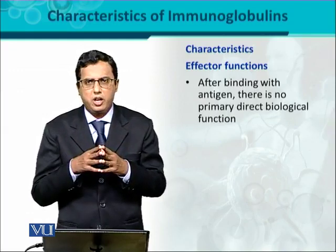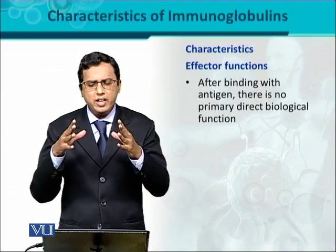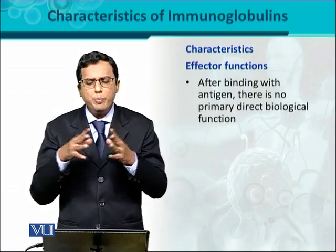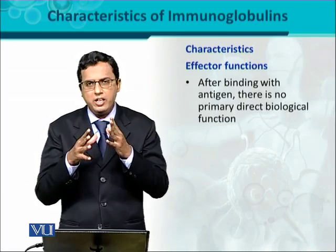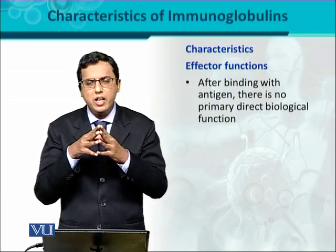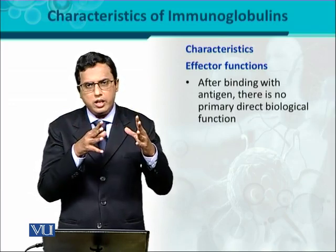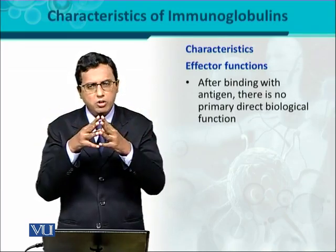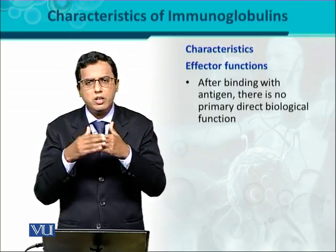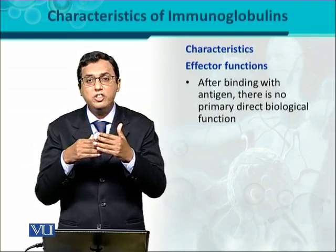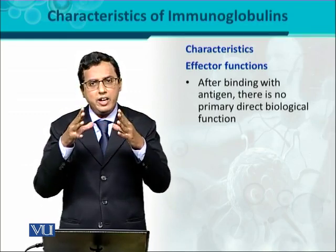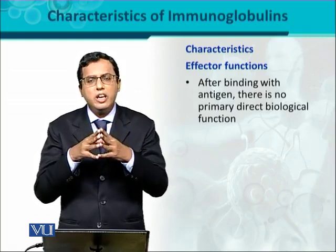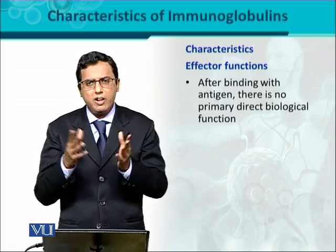Another important characteristic of antibody or immunoglobulin is effector function. When an antigen binds with an antibody, afterwards there is no primary direct biological function - after antigen-antibody binding, they can neutralize the antigen, but no direct biological function is performed until the antigen-antibody complex is formed. As a result, they produce certain secondary functions called effector functions. In response to the antigen-antibody reaction, immune components or immune cells are going to be affected.